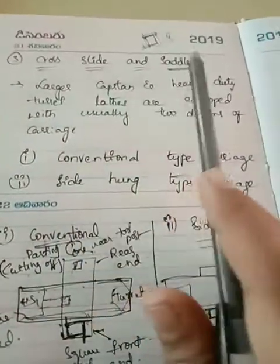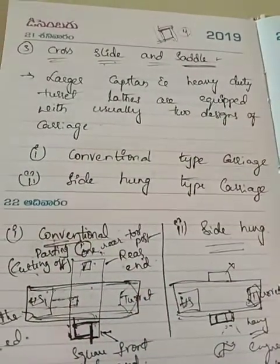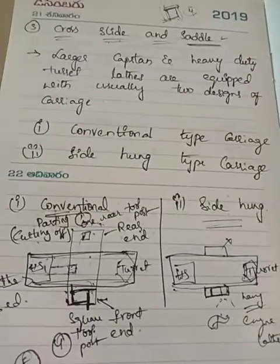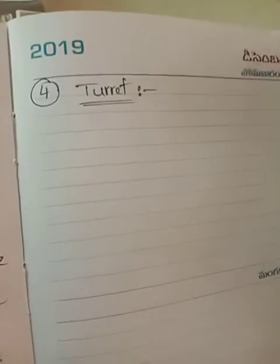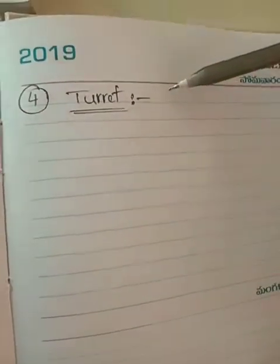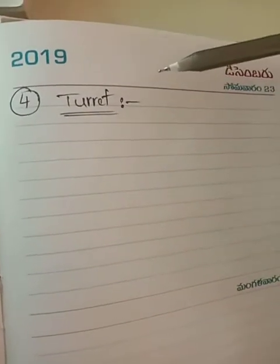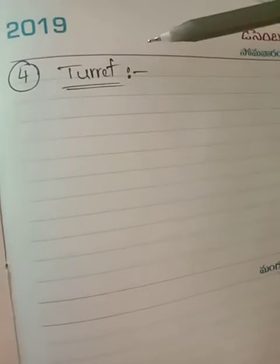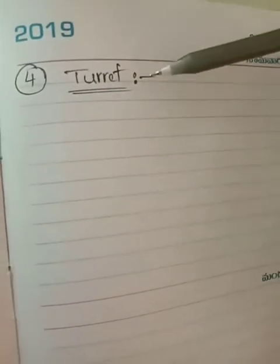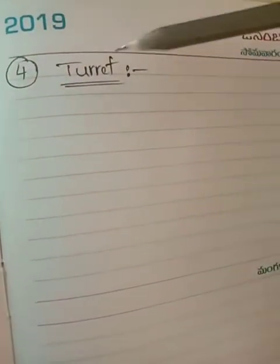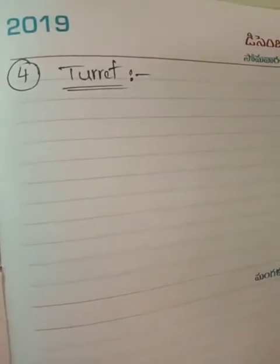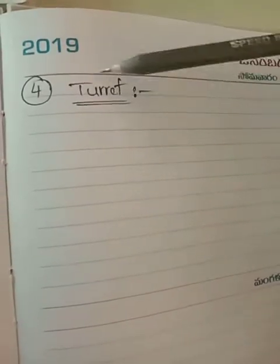This is about the third part: cross-slide and saddle. Now move to the fourth part: turret. What is meant by turret? Turret is nothing but a hexagonal-shaped tool holder. The tool holder is used to hold more number of cutting tools. We have a hexagonal turret, which is capable of holding six number of tools. Or it may be octagonal, which can hold eight number of tools. Based on the shape of the turret, the number of tools to be mounted is decided.